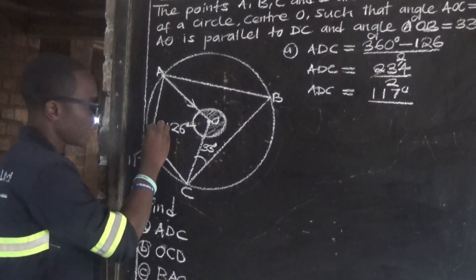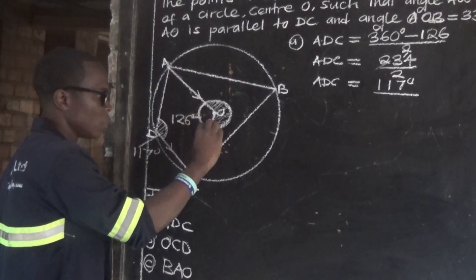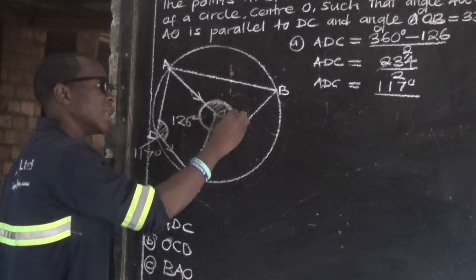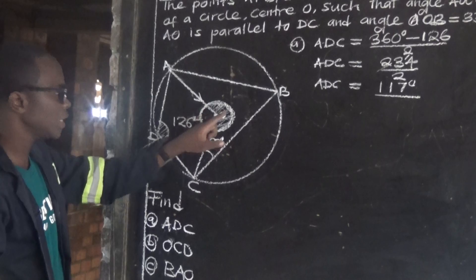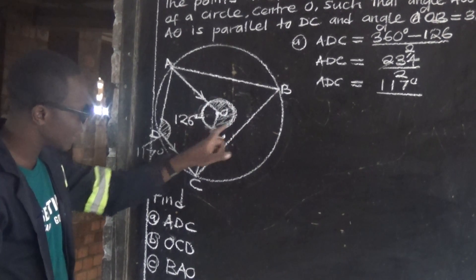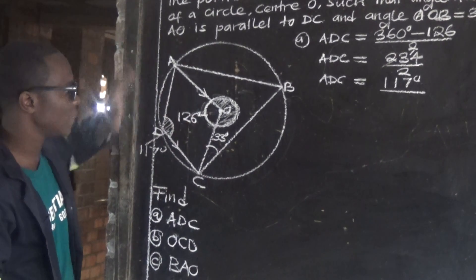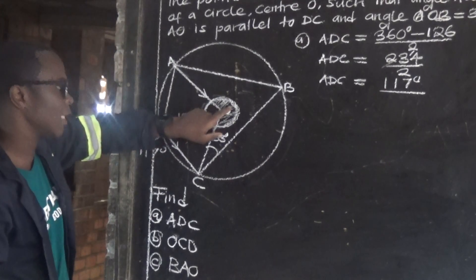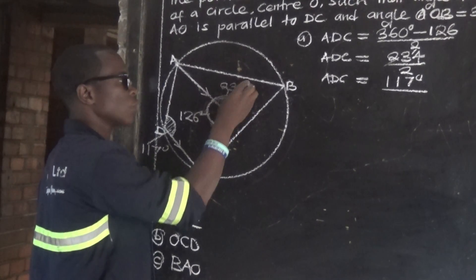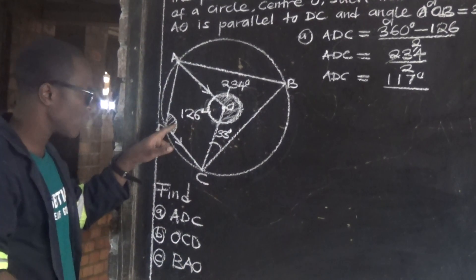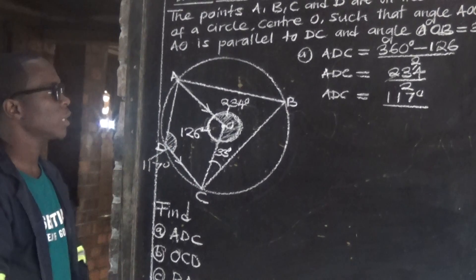So if you want angle ADC and we have this angle of 126, you find this reflex angle on the other side by saying 360 minus 126 equals 234. Then divide 234 by 2 to get this angle ADC, which is 117 degrees.